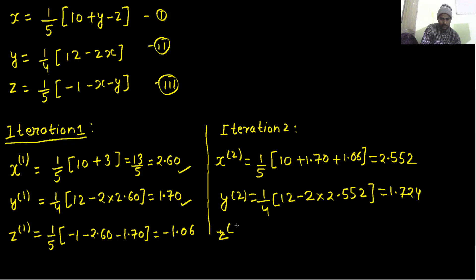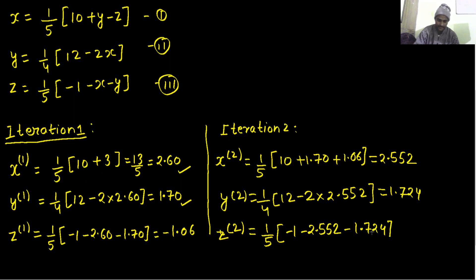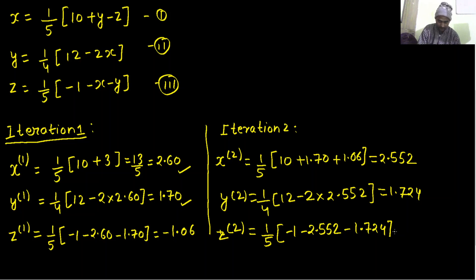The z value for the second approximation is 1/5 times (minus 1 minus x minus y), using x equals 2.552 and y equals 1.724. So z equals 1/5 times (minus 1 minus 2.552 minus 1.724), which gives minus 1.055. After two iterations, x is not matching even to one decimal place, but y and z are matching to one decimal place.